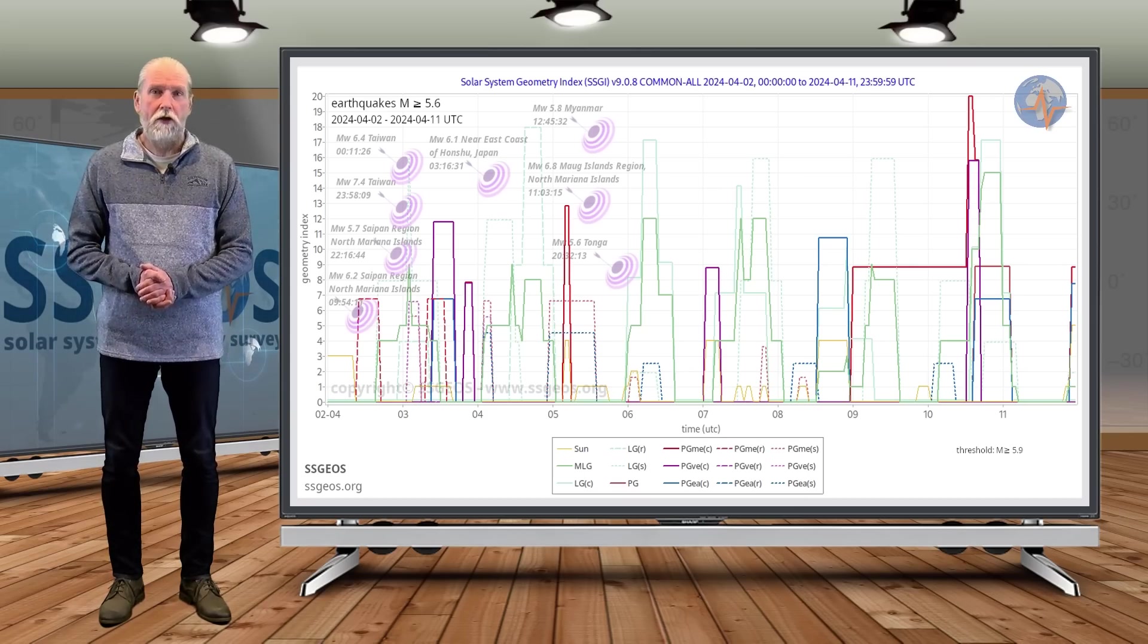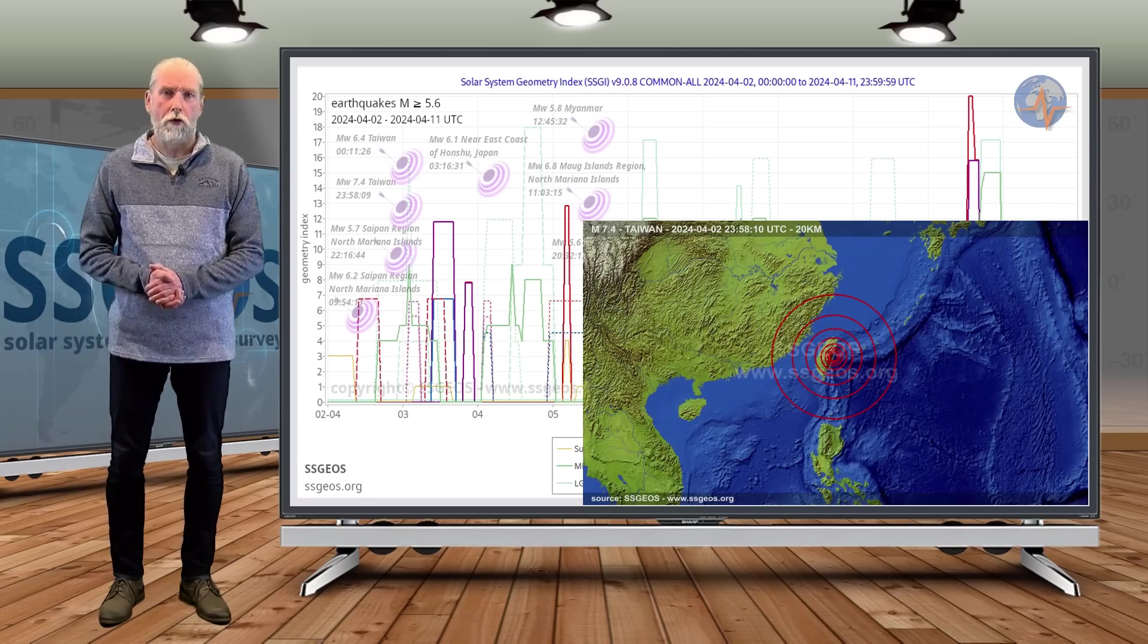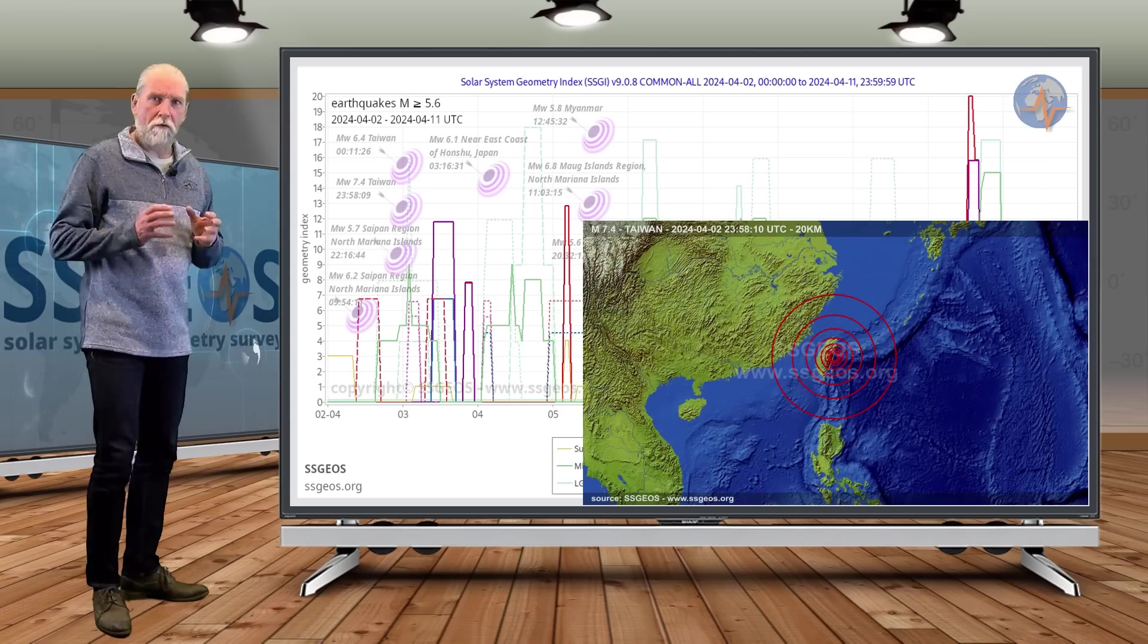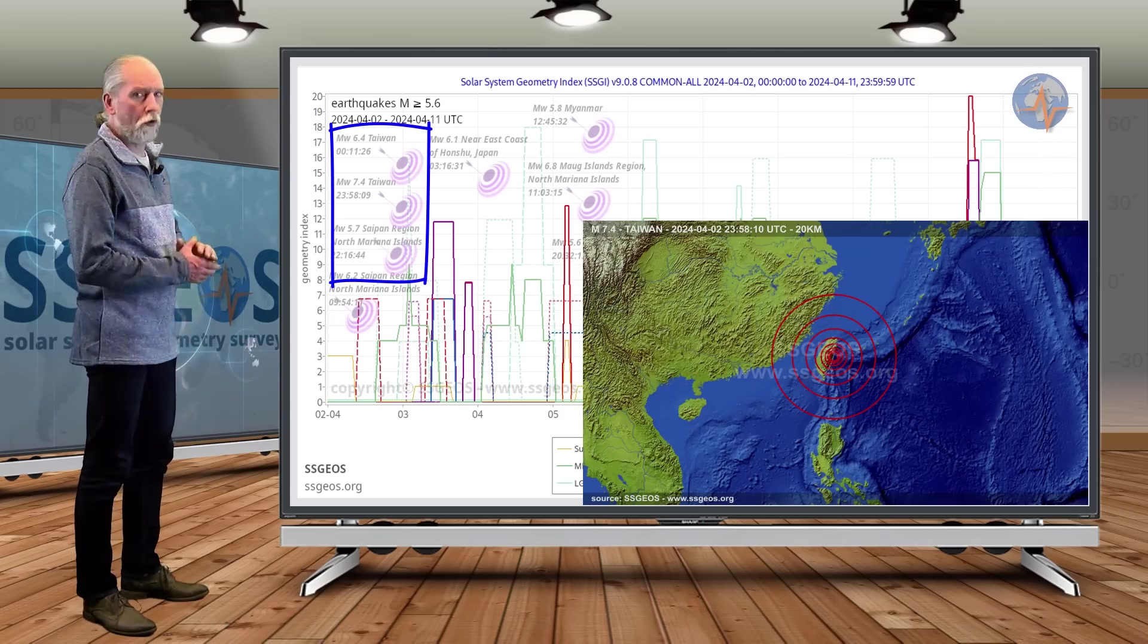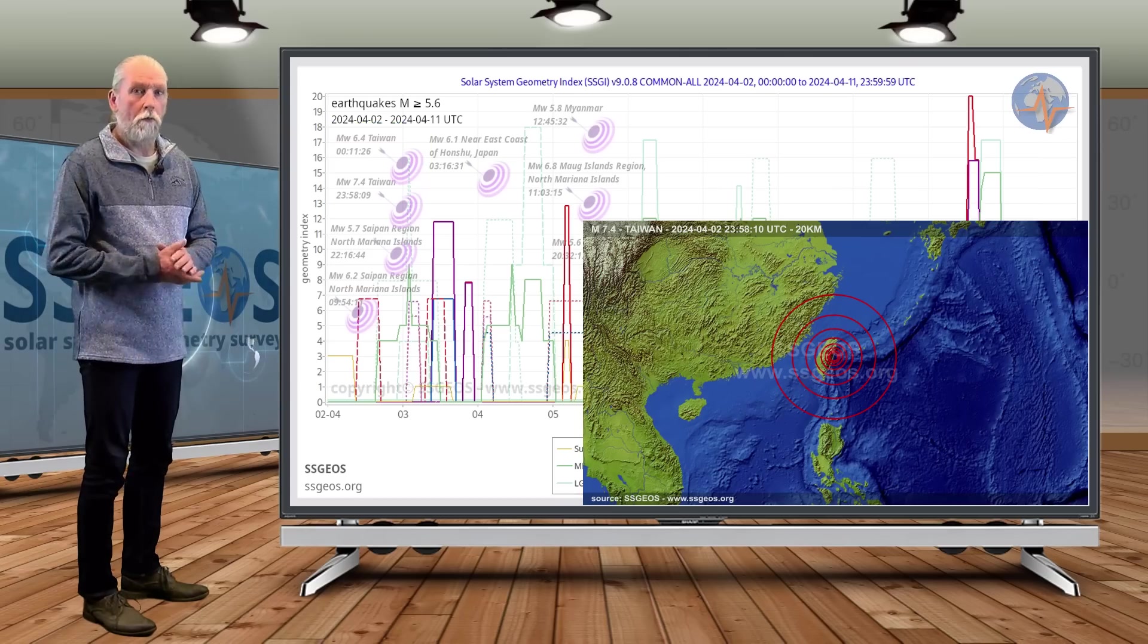It actually did trigger a mid-7 magnitude earthquake, but five days after the geometry occurred. It was in Taiwan. As you can see here on the SGI graph, it measured 5.6 and larger earthquakes. Later on the second, a 7.4 in Taiwan. There was also an aftershock 6.4 and several aftershocks. Major earthquake.